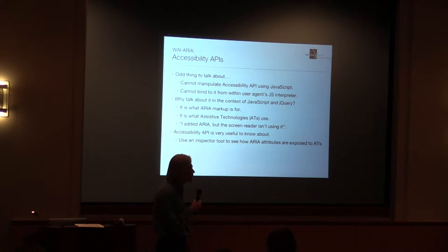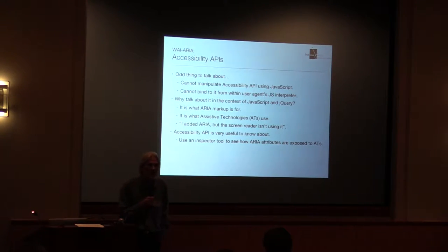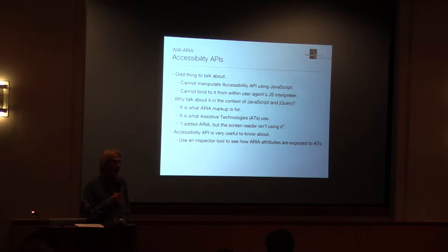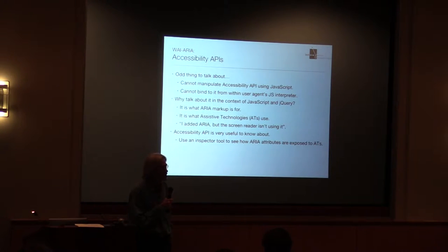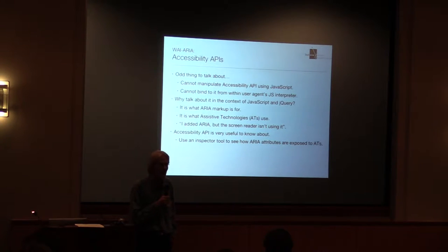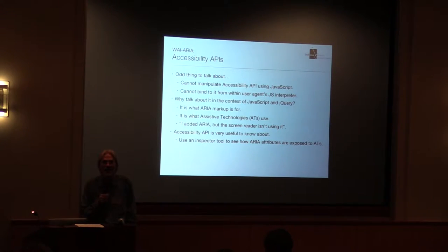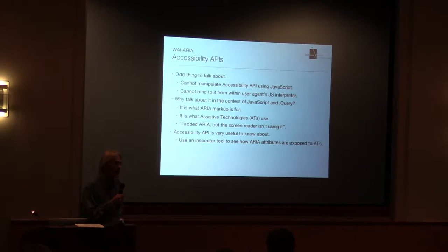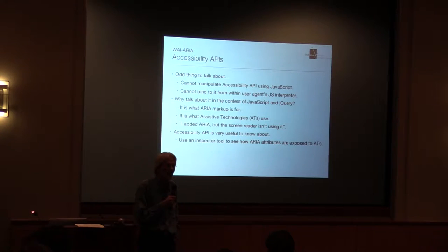At work, sometimes a developer will come to me and say, 'I've added all this ARIA markup to my web app, and the screen reader is not presenting it correctly. What am I doing wrong?' And I will say, 'What does the accessibility API layer tell you?' And I'll get a blank stare. At which point I'll fire up some accessibility inspector and look at what their markup is actually doing.